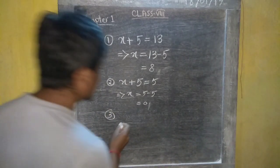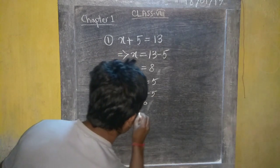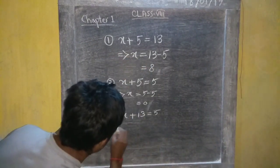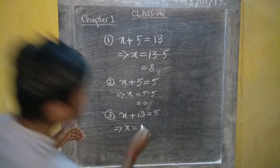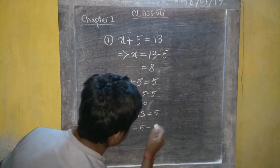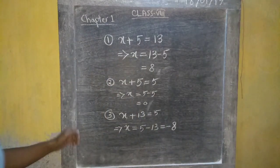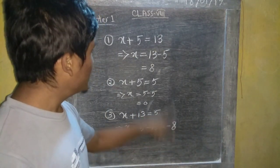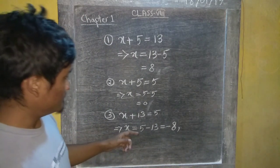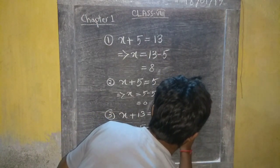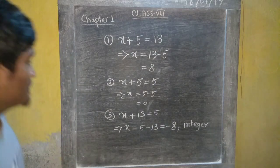Example 3: x plus 13 equal to 5. Solution: x equals 5 minus 13, equal to minus 8. So negative number — this is an integer.